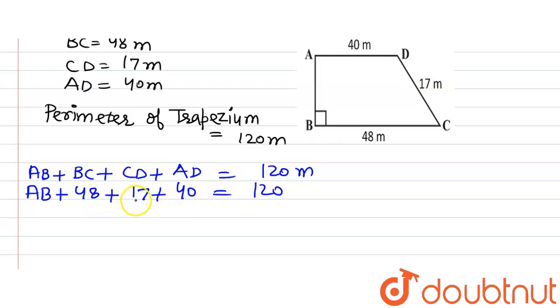Now solving it further, we will get AB plus all this will add up to give us 105 is equals to 120.